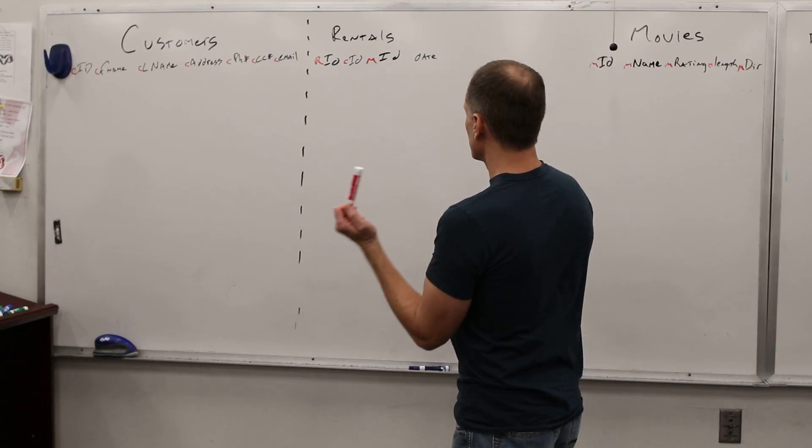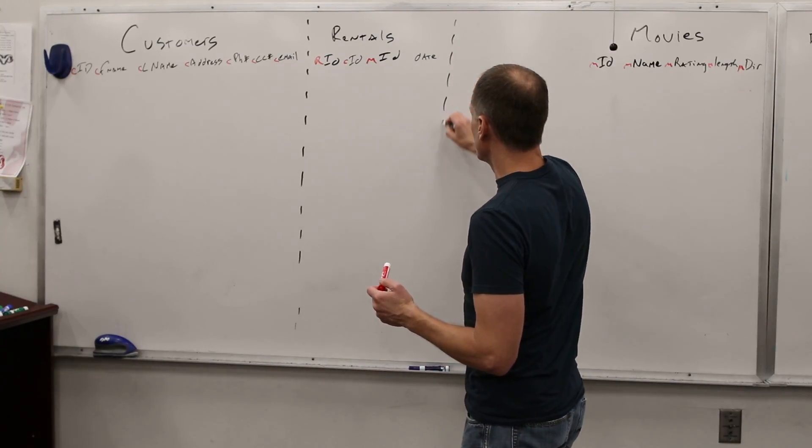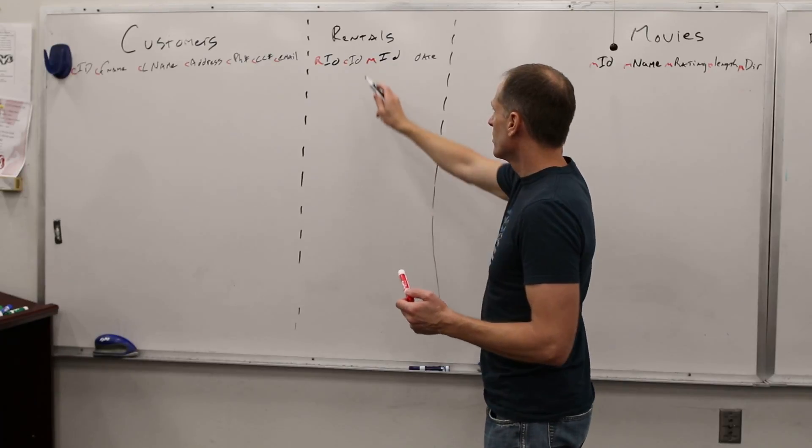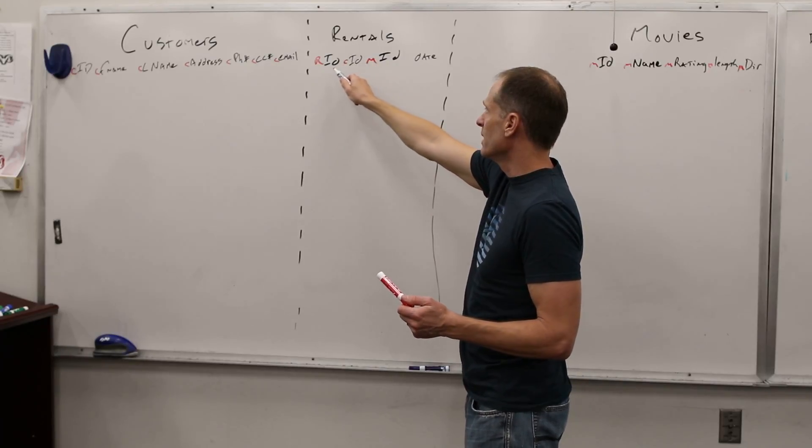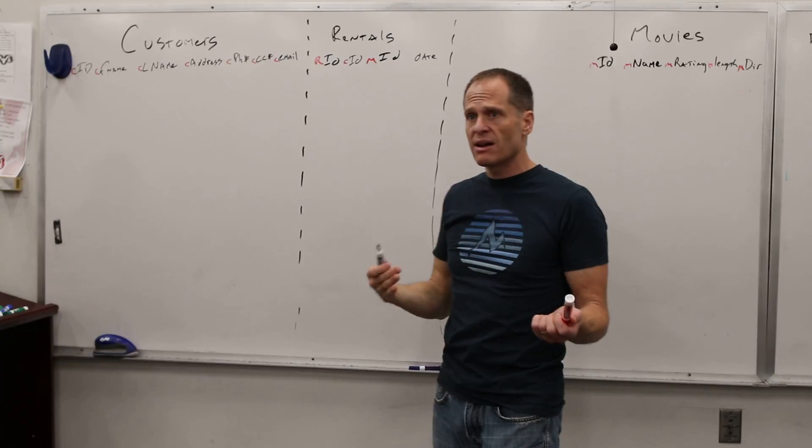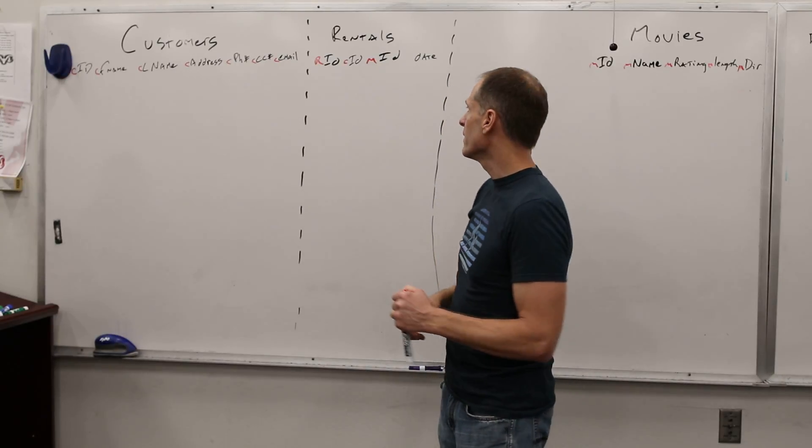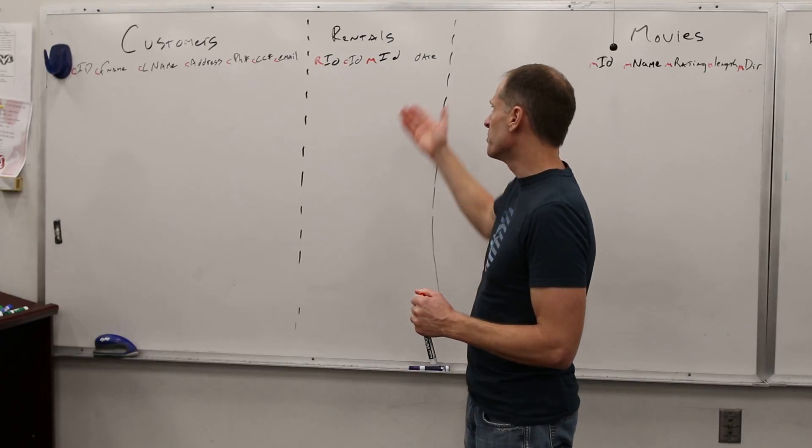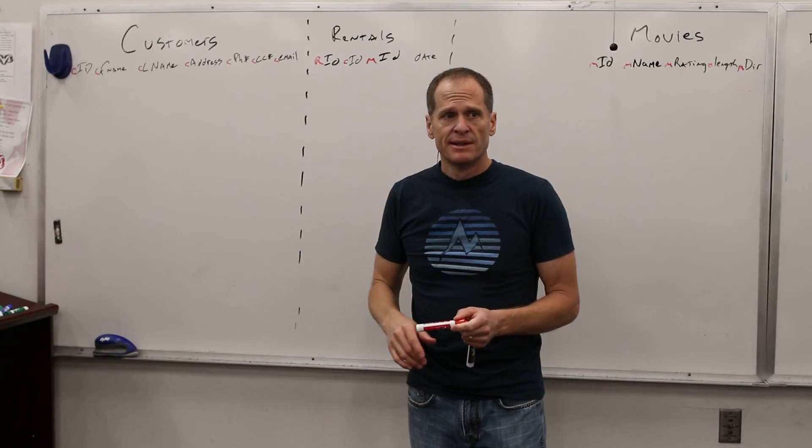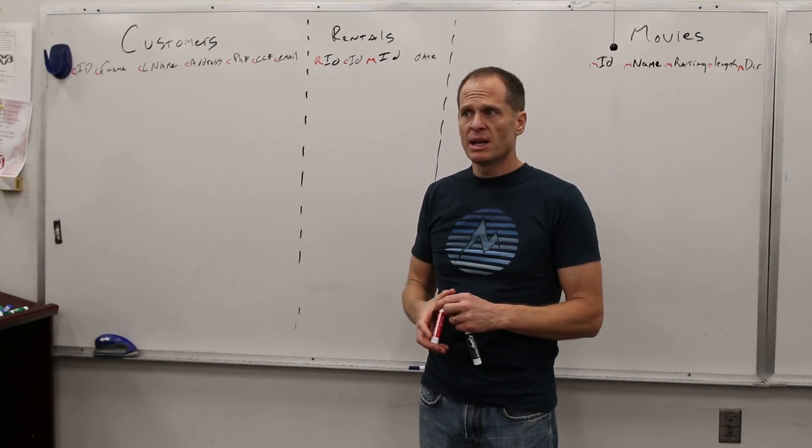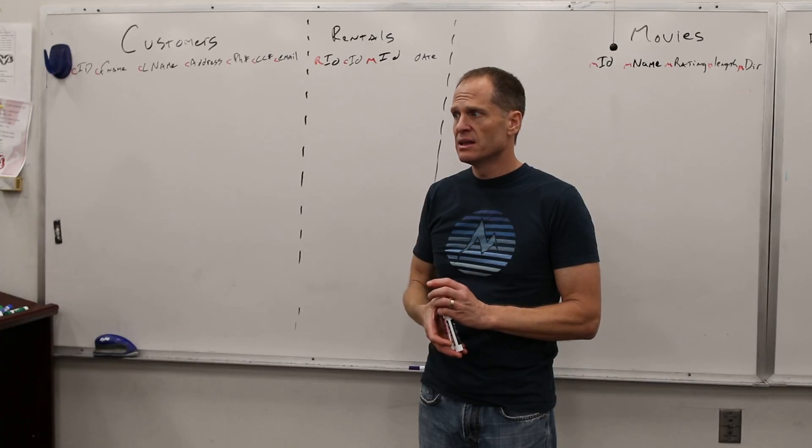So that would be rental ID, customer ID, movie ID. We know which movie was rented, we know which customer rented it. And then we have a unique ID because every transaction has to have a unique ID so we can uniquely identify it. And then we know the date it's rented. We might put the price down so we might be able to do some analysis on that later.